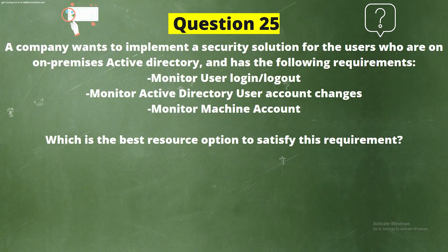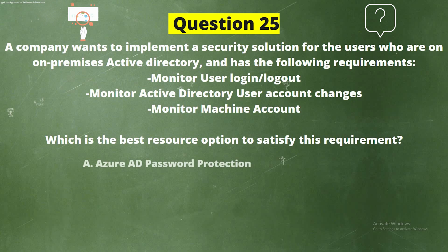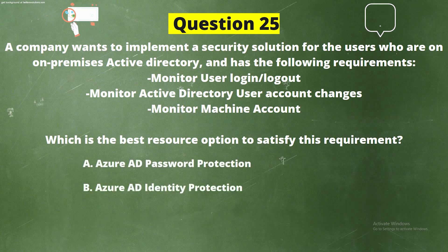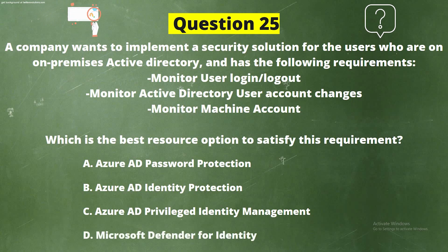Question 25. A company wants to implement a security solution for users on on-premises Active Directory with the following requirements: monitor user login or logout, monitor Active Directory user account changes, and monitor machine accounts. Which is the best resource option? Option A: Azure AD Password Protection. Option B: Azure AD Identity Protection. Option C: Azure AD Privileged Identity Management. Option D: Microsoft Defender for Identity.